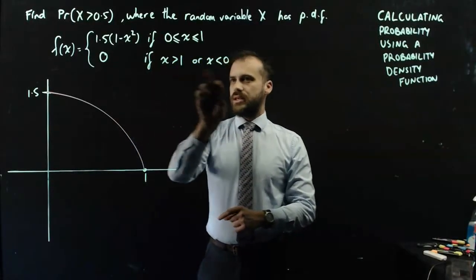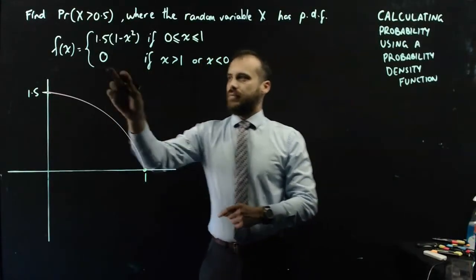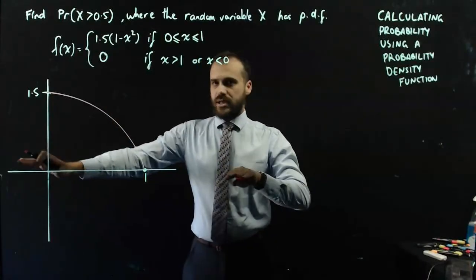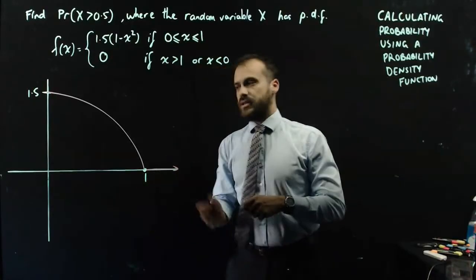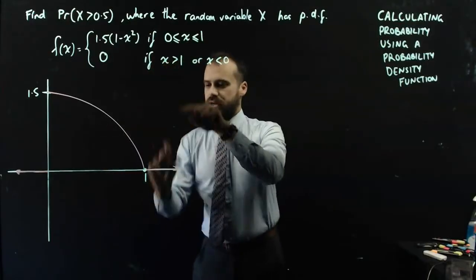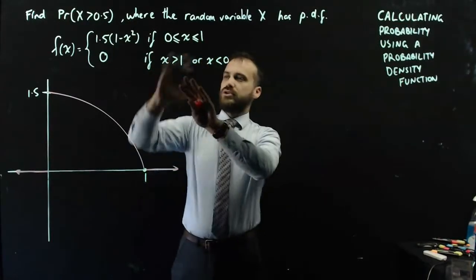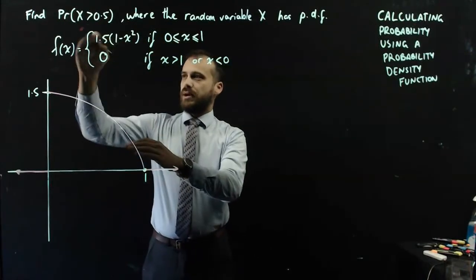This bit here: 0 if x is greater than 1 or x is less than 0. That's a line along the x-axis. So it's a straight line from here off into infinity, and it's a straight line from here off into infinity. That means that the only really useful part of our probability density function is the first part of our piecewise.